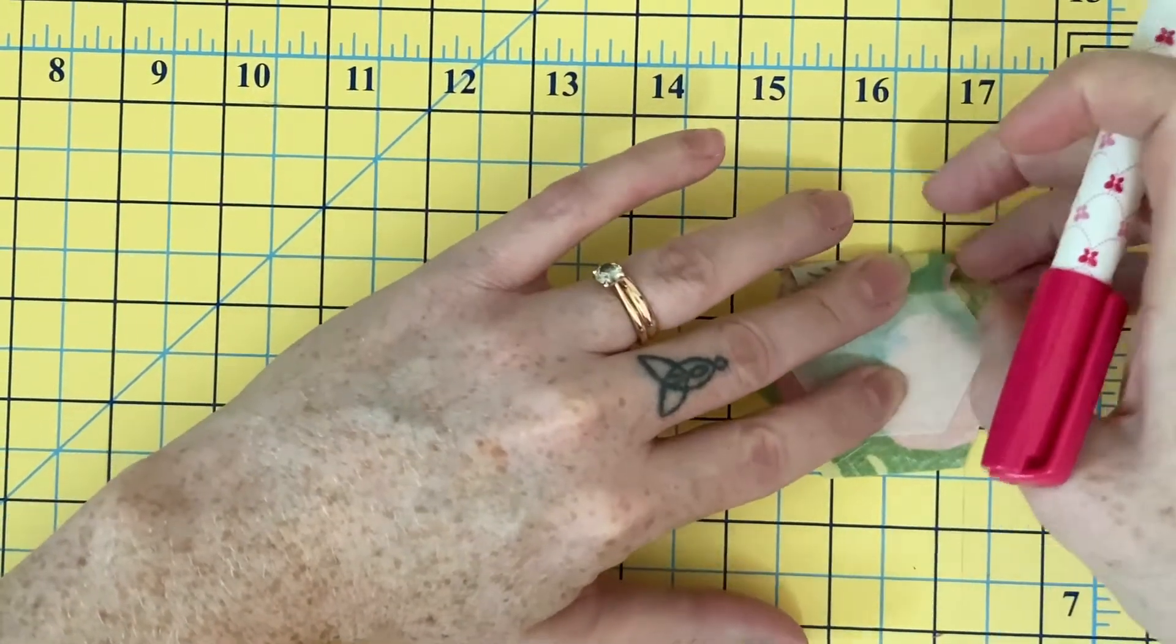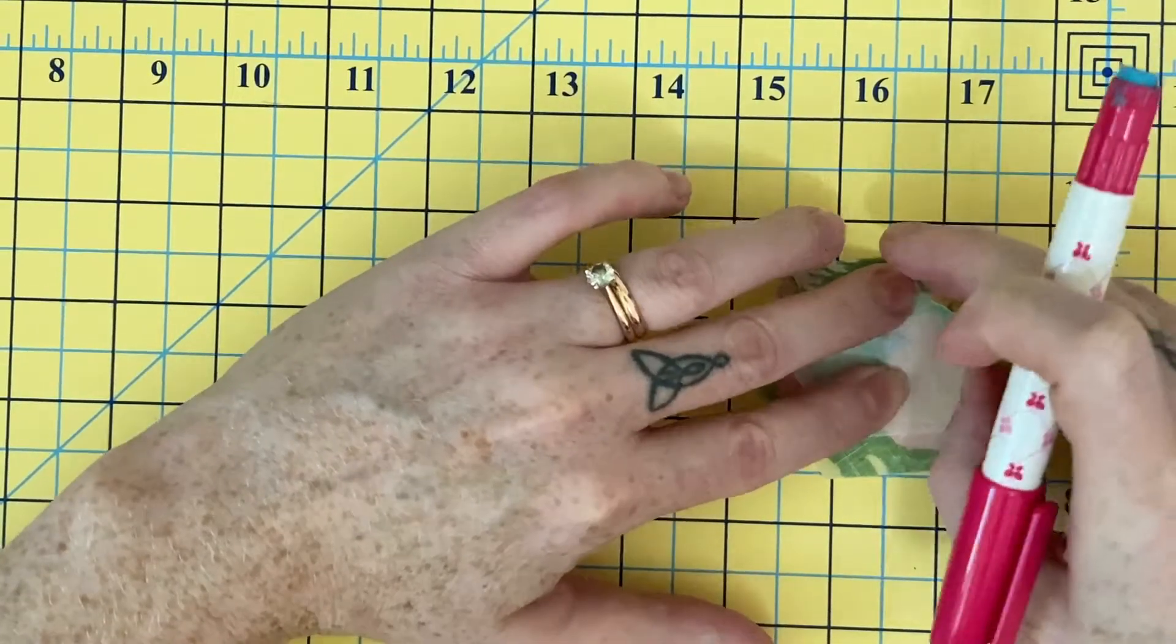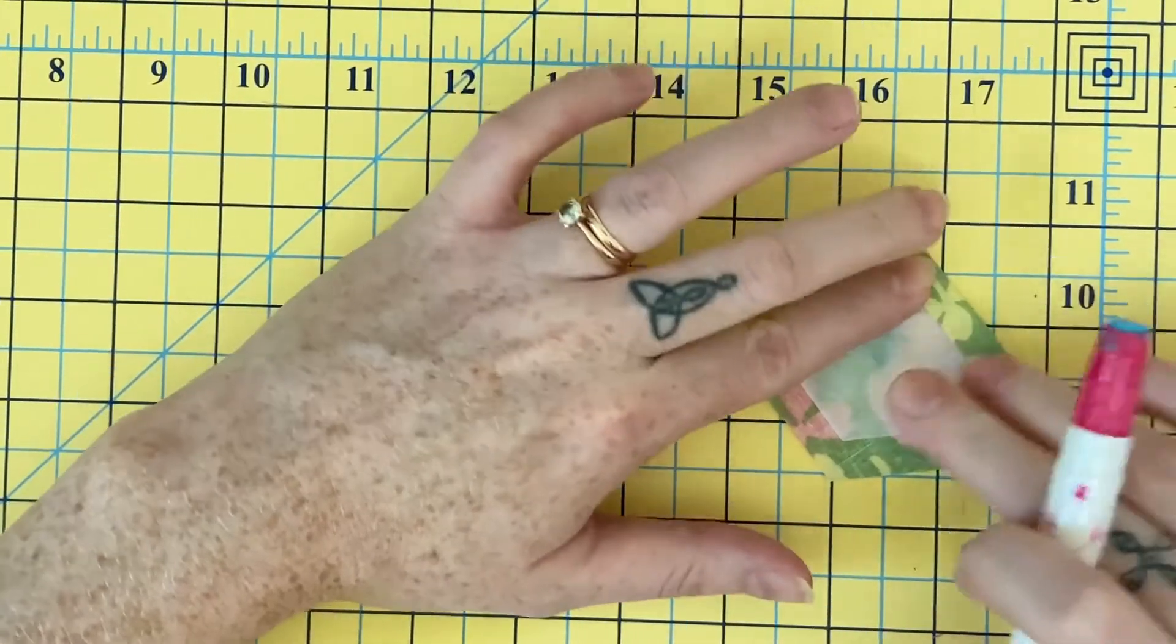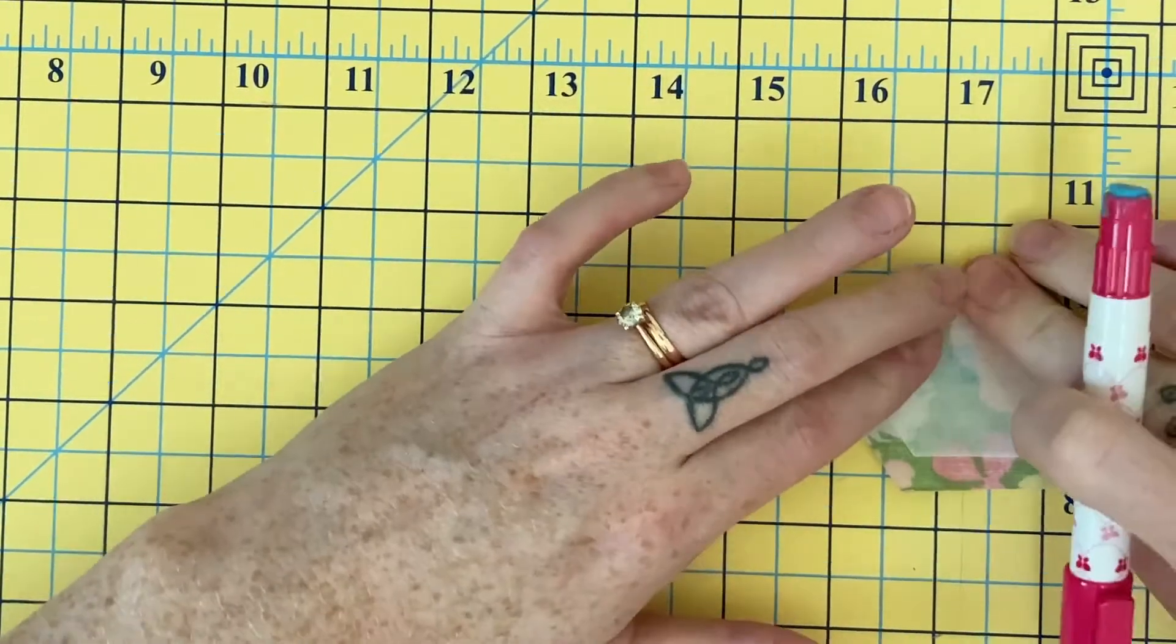Okay, so that when it folds over, now that creased corner has some glue too.